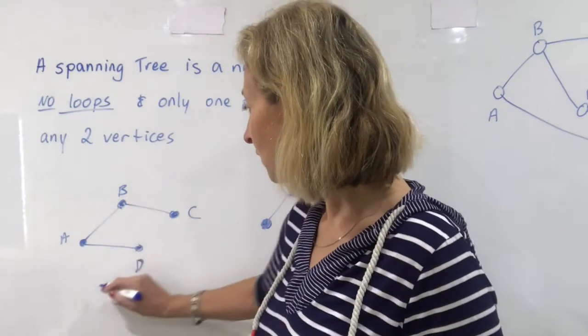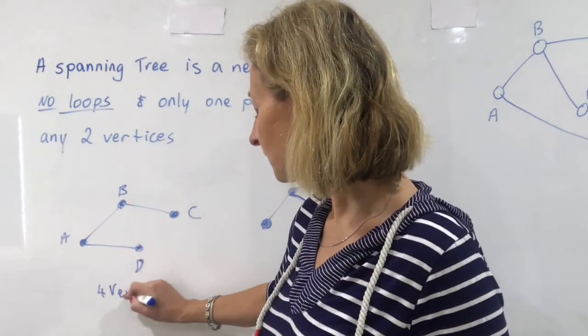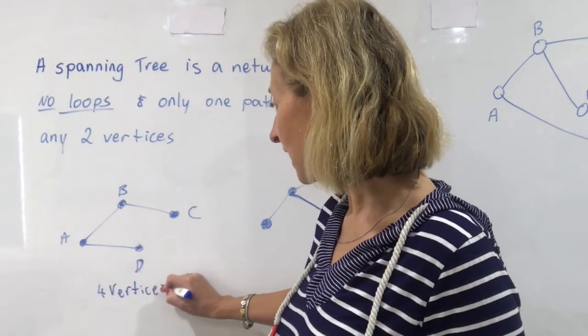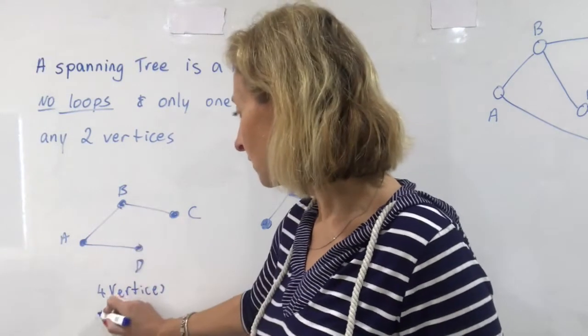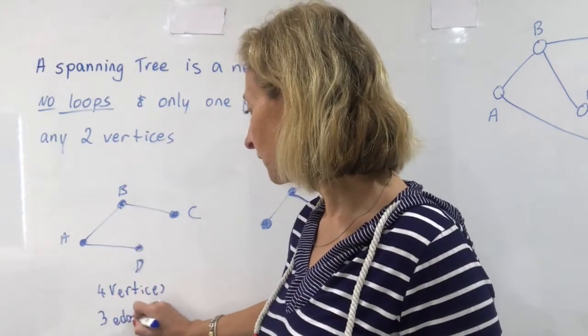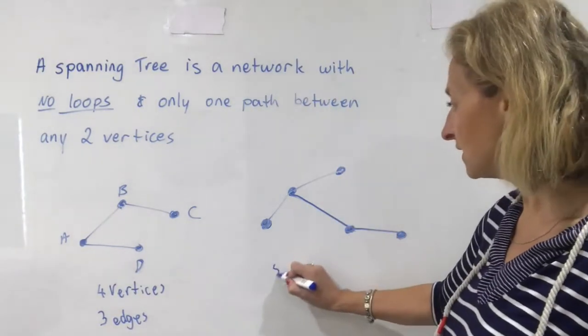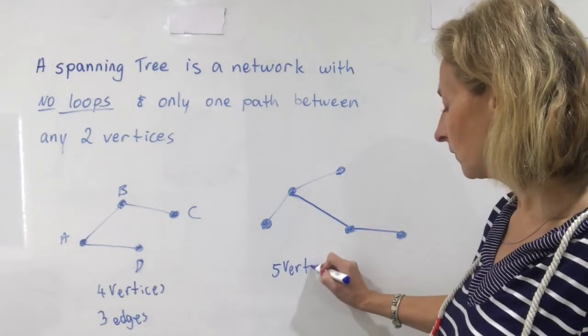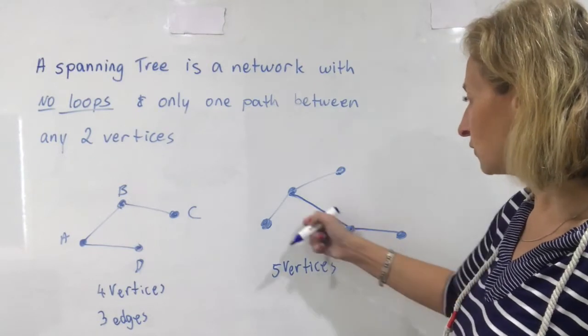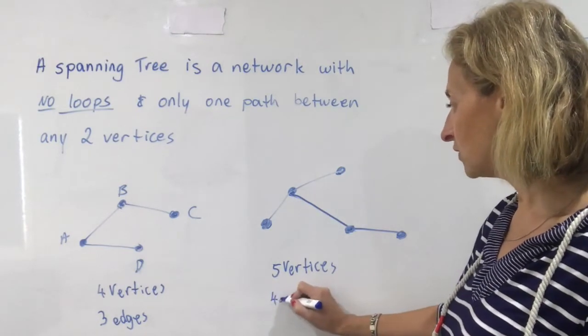Here I have one, two, three, four vertices. And how many edges do I have? One, two, three. Three edges. Let's have a look over here. I have one, two, three, four, five vertices. And how many edges? One, two, three, four. Four edges.